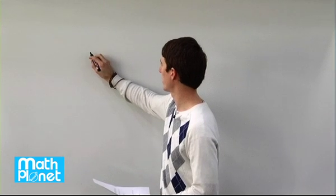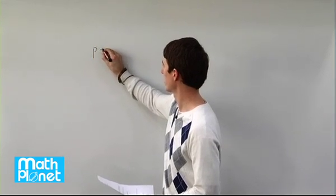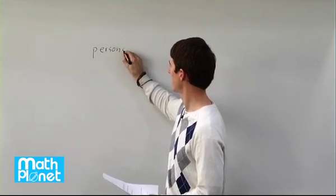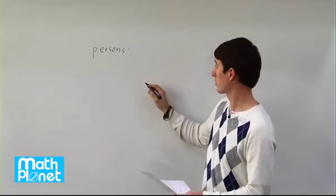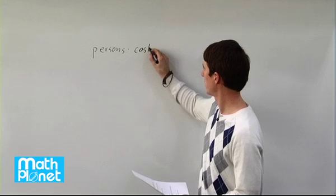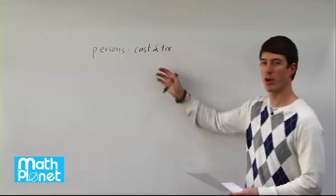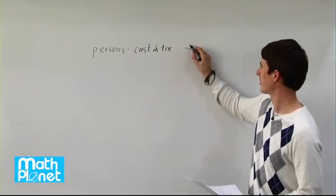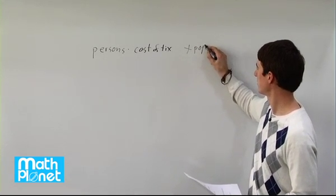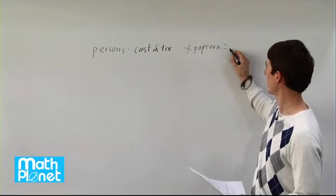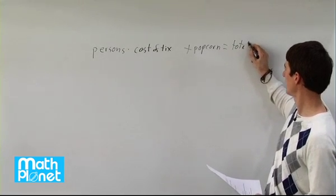So if we write that out we can just say the number of persons times the cost of the tickets. So we have cost of tickets and then we also want to add on to that the popcorn, just the price of the popcorn and that's going to equal our total cost.